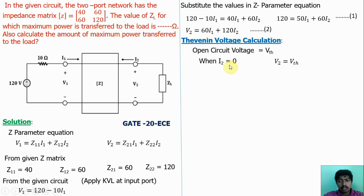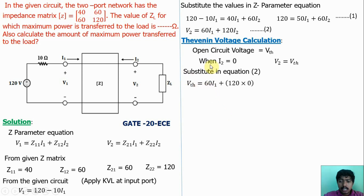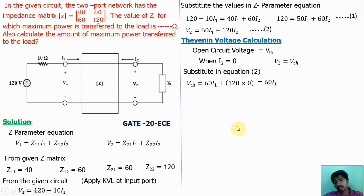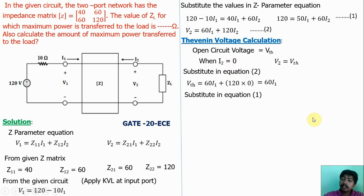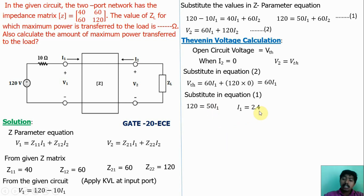Substituting into equation 2 with I2 = 0, we get VTH = 60·I1. Substituting into equation 1: 120 = 50·I1, so I1 = 0.4 A. Substituting back into the VTH equation: VTH = 60 × 0.4 = 144 V. Thevenin voltage calculation is complete.